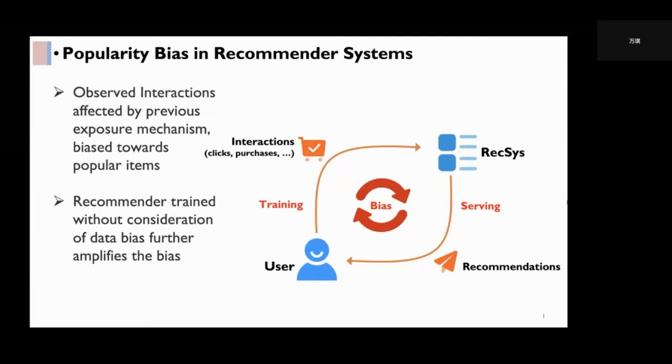Most recommender systems optimize their model on such observational data without considering the bias. So the trained model would inherit or even amplify the bias.